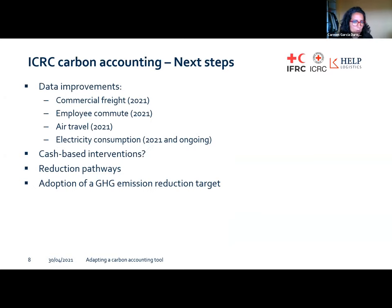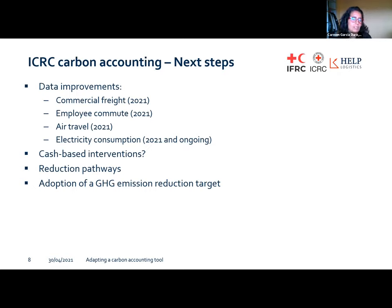These are our next steps for the carbon accounting tool. Having run the tool twice, we've realized we really need to improve some of the data we have. Some things started last year, but it takes time to update the software we use — such as commercial freight, employee commute, travel, and electricity consumption. The cash-based intervention methodology also needs further work, and not just for ICRC but for the humanitarian sector broadly. Most importantly, now is the right time to move beyond just establishing a baseline of our emissions and start setting actual goals to reduce them.